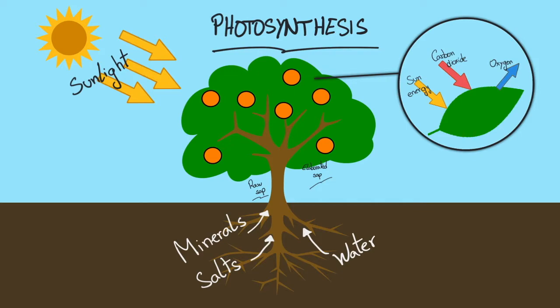In the leaves, we can see here that they get sun energy with the sunlight, carbon dioxide, and they expel, they release oxygen. With the sun energy, the raw sap is combined with carbon dioxide and the result is a mixture called elaborated sap.